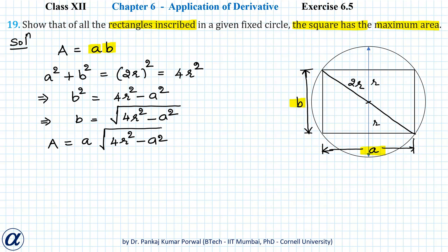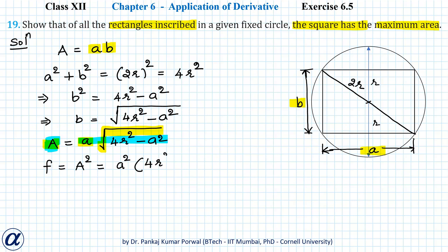If we want, we can take the derivative of area with respect to A and find our answer for maximum and minimum, but because of this square root it will be tedious to find the first and second derivatives. However, since the area of the rectangle will always be positive, the maximum of area and area squared will lie at the same value of A. So instead of maximizing area, I can maximize the square of the area. Let us call the square of the area F, which equals area squared, that is A squared into 4R squared minus A squared. To maximize F, we set dF by dA equals zero.